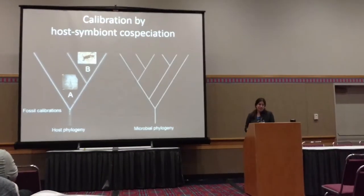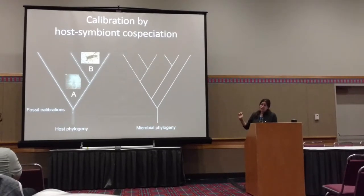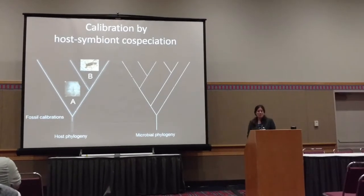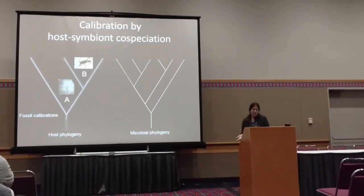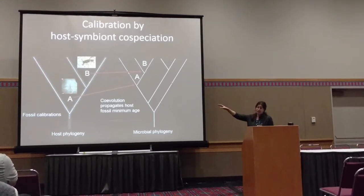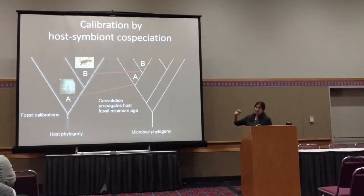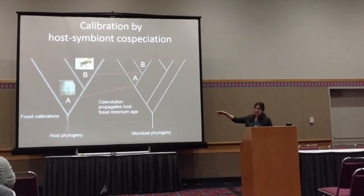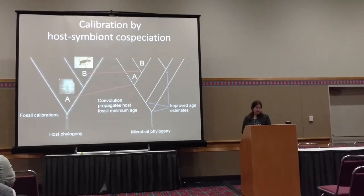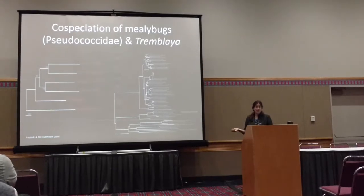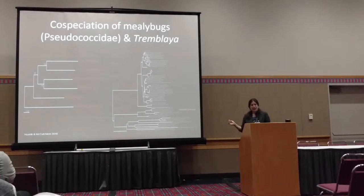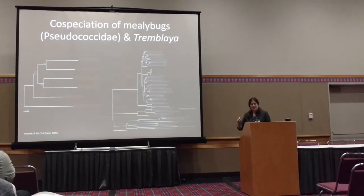There are only so many horizontal gene transfers identified at the moment. For some of the shallower evolution we can use — and this is the co-evolution part — calibration by hosts and co-speciation. This is not a novel idea, but the idea is that if you have a bacterial clade whose phylogeny matches its host, you can apply the age of the host clade onto the bacteria to help improve age estimates.